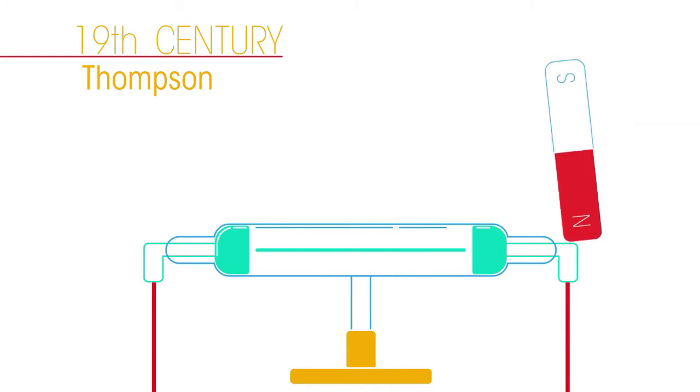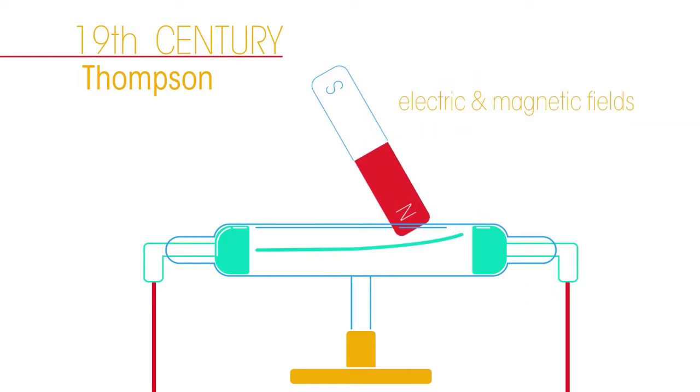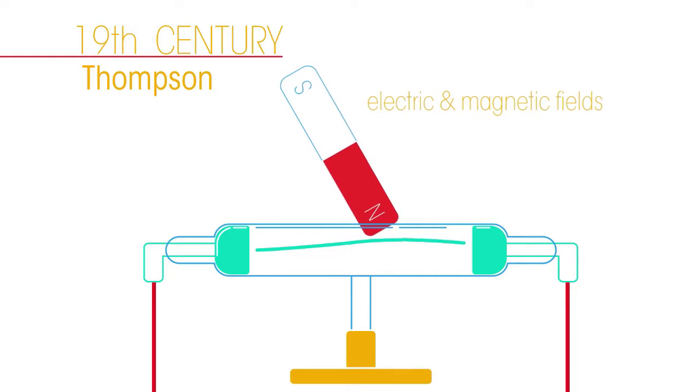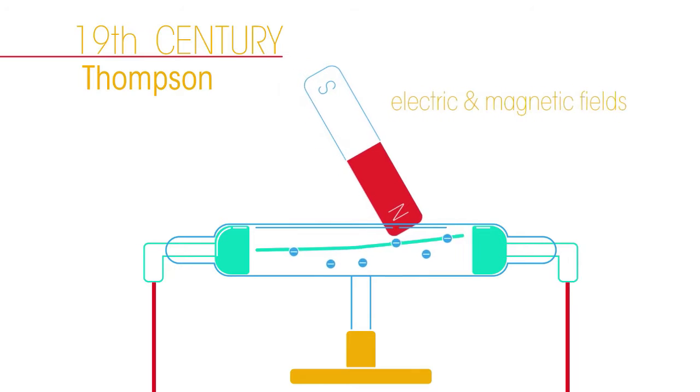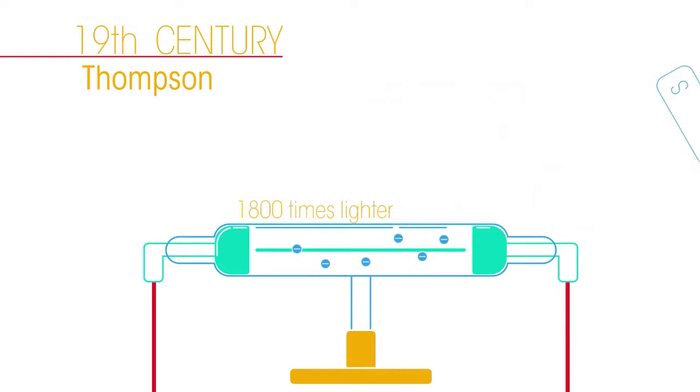In the late 19th century, a man called Thompson expanded on Dalton's idea. He discovered the existence of electrons when making cathode ray beams interact with electric and magnetic fields. He determined that the cathode rays consisted of a beam of negatively charged particles that were 1,800 times lighter than the lightest known atom, hydrogen.